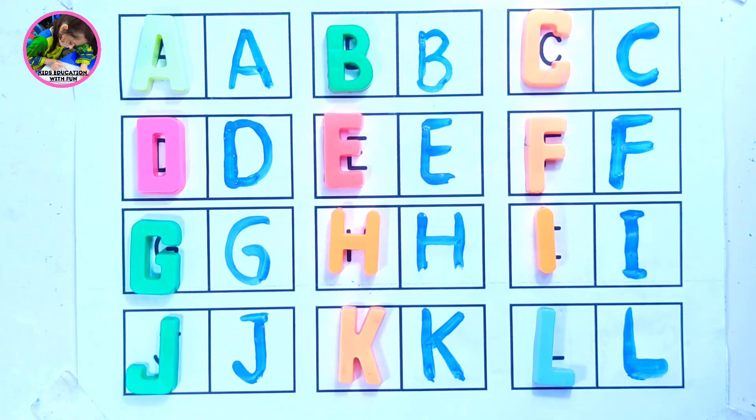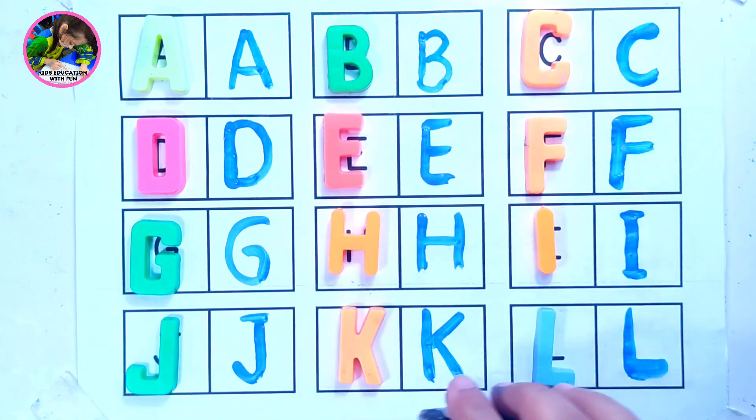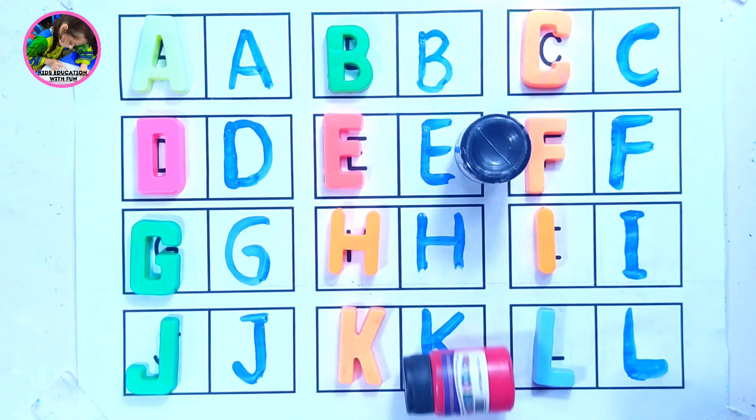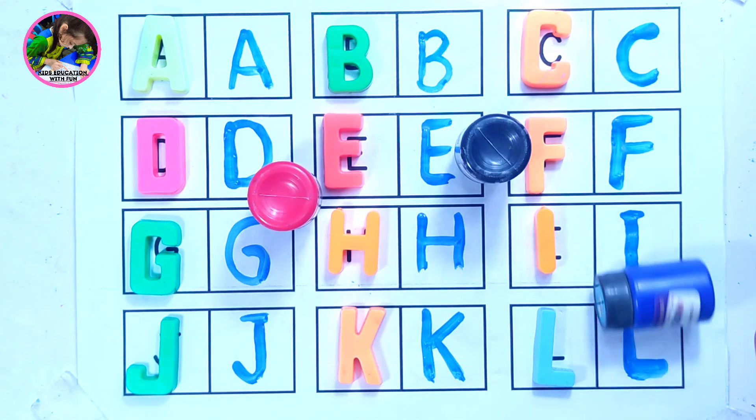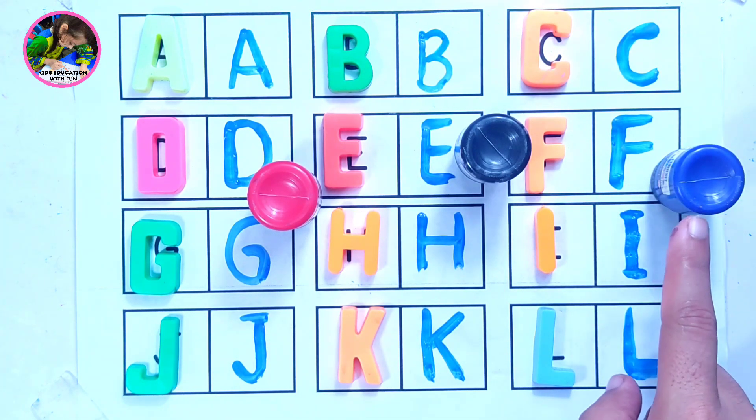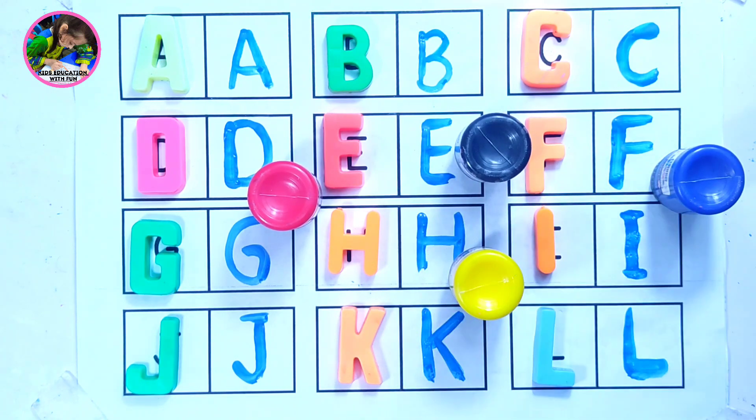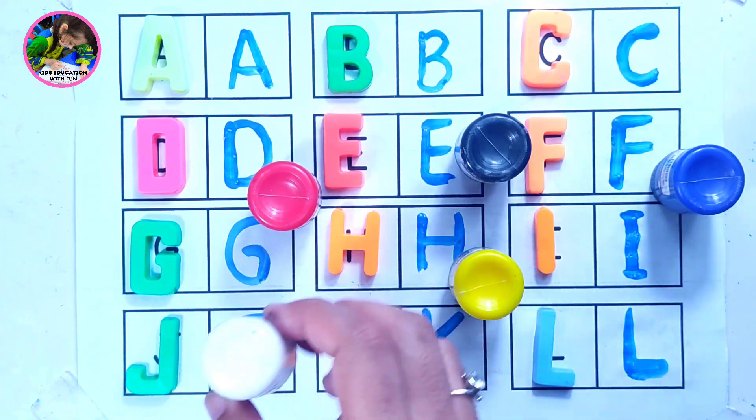Let's learn some colors. We have different colors here. This is black color, red color, dark blue color, yellow color, and white color.